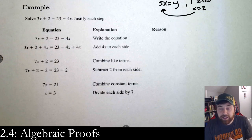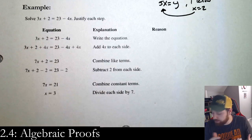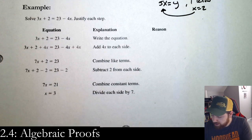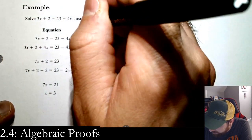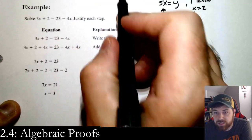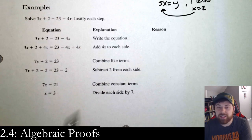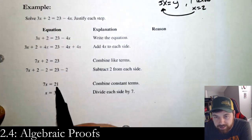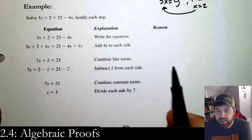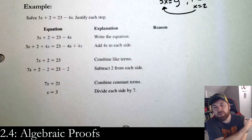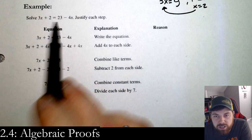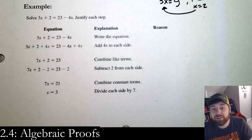So let's look at our first proof. This is called a two-column proof. The reason it's called a two-column proof is that here we have the equation and then the reason — here's the step that we did, and why did you do it? The question says: solve 3x + 2 = 23 − 4x and justify each step.